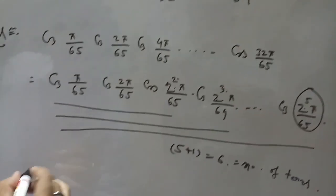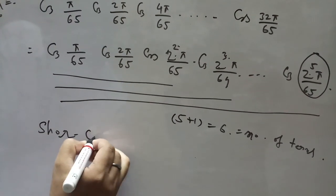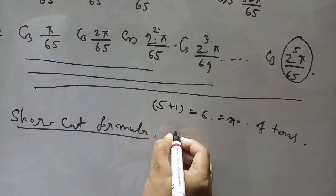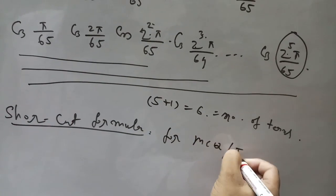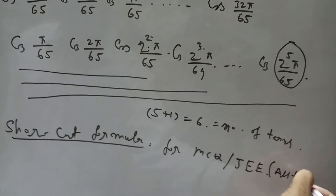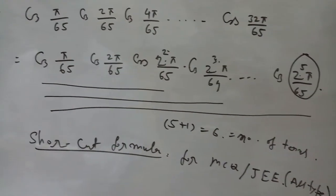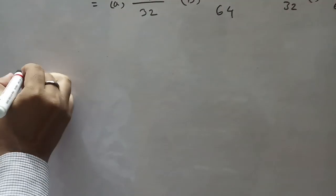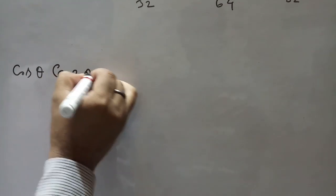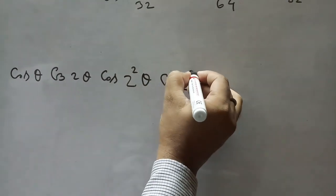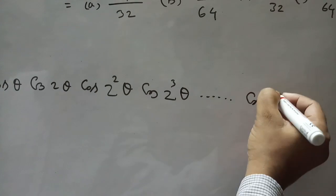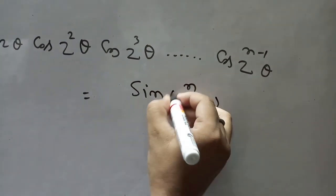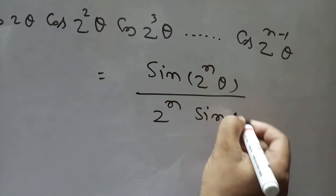Now we apply the shortcut formula. This shortcut formula is used only for MCQ-type questions in all joint entrance exams. The formula is: cos θ · cos 2θ · cos 2²θ · cos 2³θ · · · cos(2^(n−1) θ) = sin(2ⁿθ) / (2ⁿ sin θ).